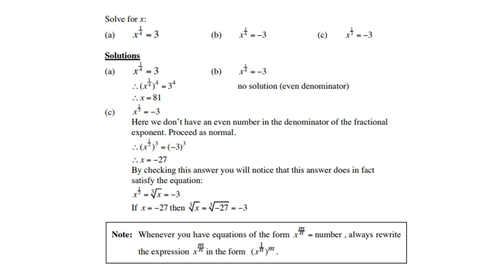Let's solve for x. A: x to the power of a quarter equals three. We know what to do — multiply both exponents by four on both sides, and three to the power of four is eighty-one. Look at B: x to the power of a quarter equals a negative number. Remember, it is an even exponent — four — so therefore there will be no solution. Don't even try to work it out.